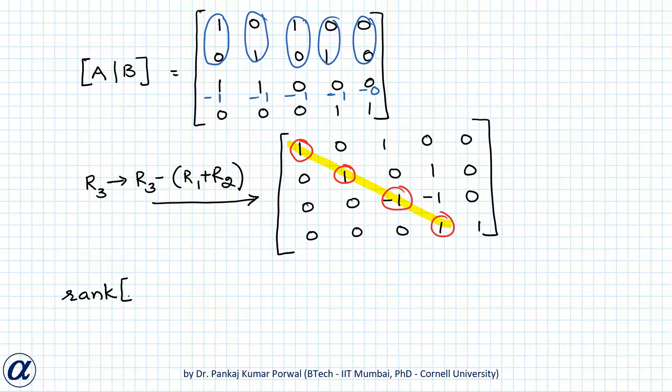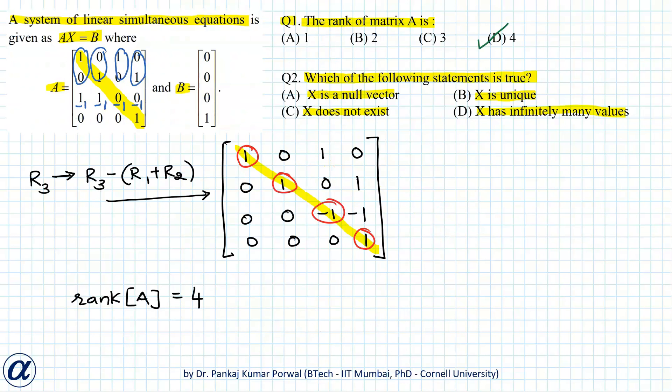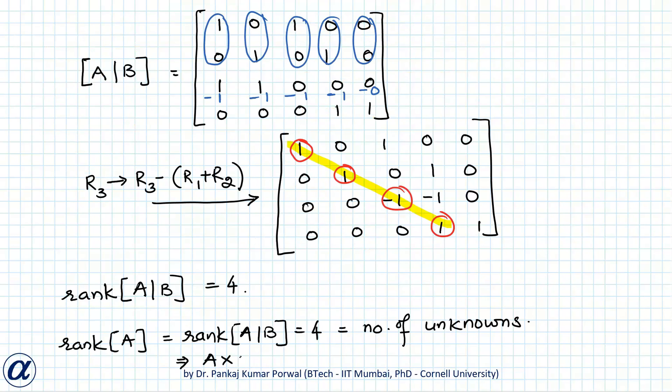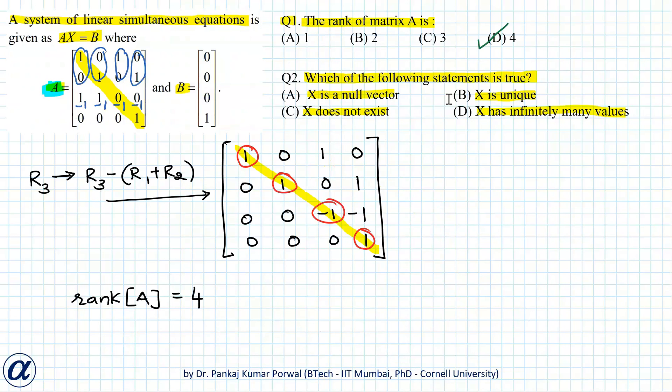Here note that rank of A equals rank of augmented matrix, and that is also equal to the number of unknowns, because here our matrix is 4 by 4. This implies Ax equals B has a unique solution, so our option B is correct.